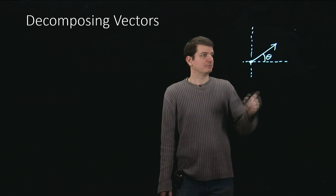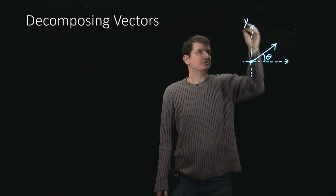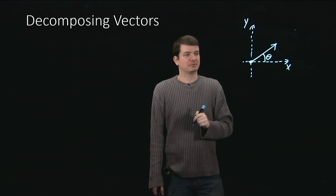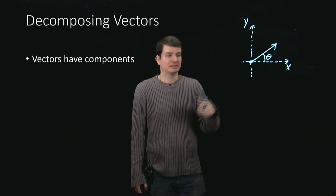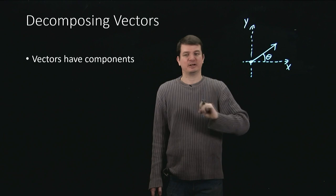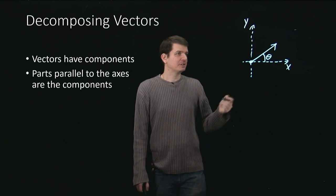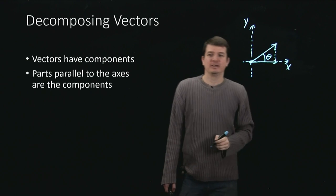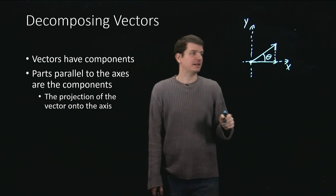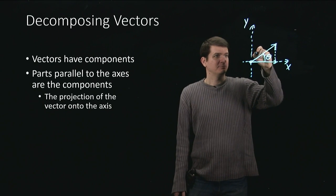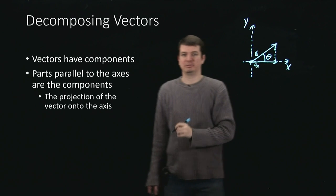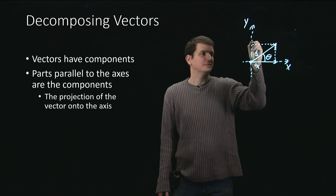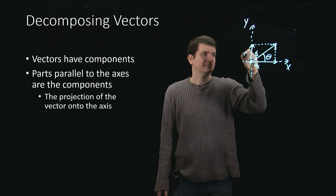In physics, of course, we don't really call them north-south-east-west — we normally just use Cartesian coordinates x and y. So in order to decompose this vector and get at its components — the pieces of the vector that lie parallel to the various axes — what we really want to do is imagine squashing this thing down onto the x-axis. Then we get this piece, and that's the projection of the vector onto the x-axis: that is its x-component. If I call this vector a, then this thing is the x-component of a. Similarly, I can squash it down onto the y-axis and get the y-component.